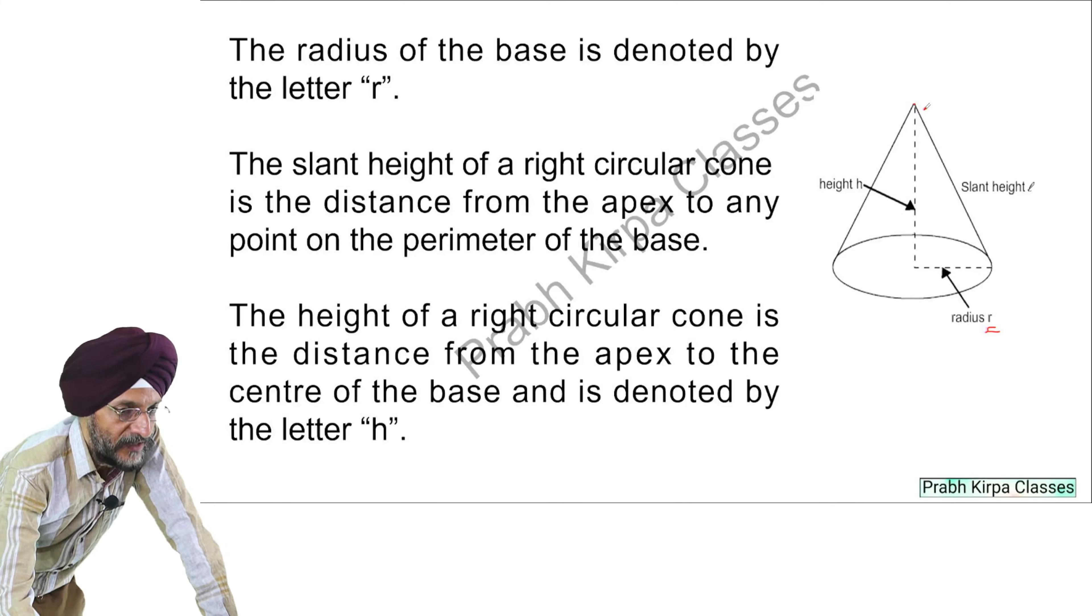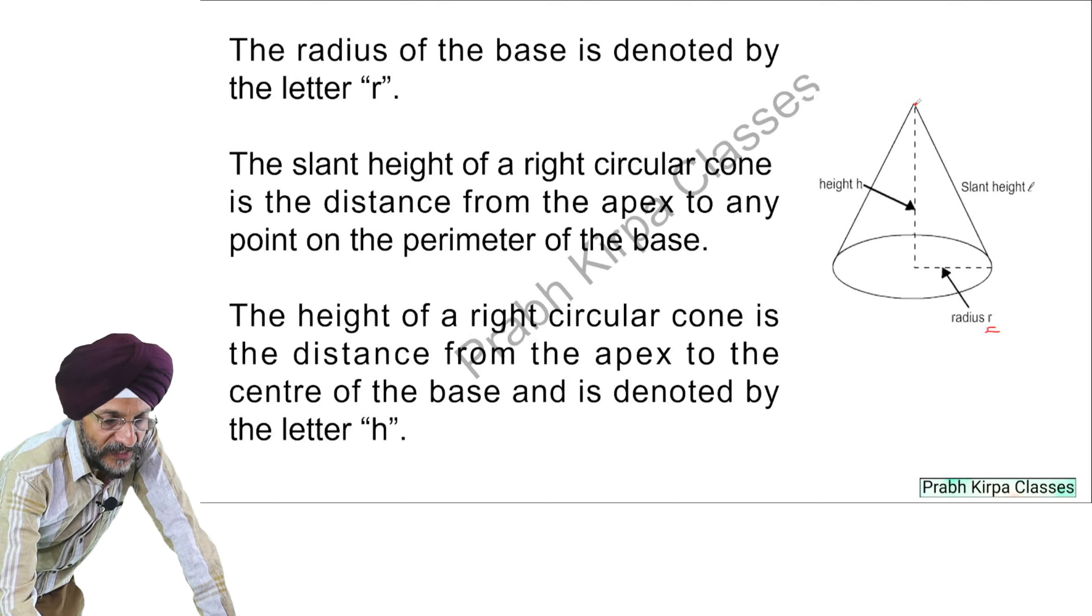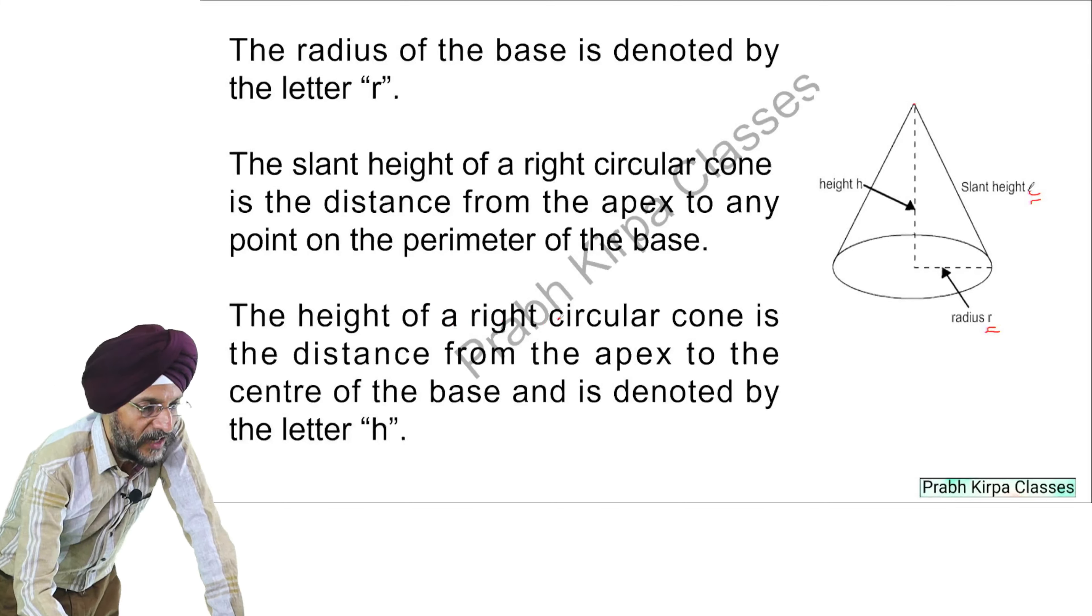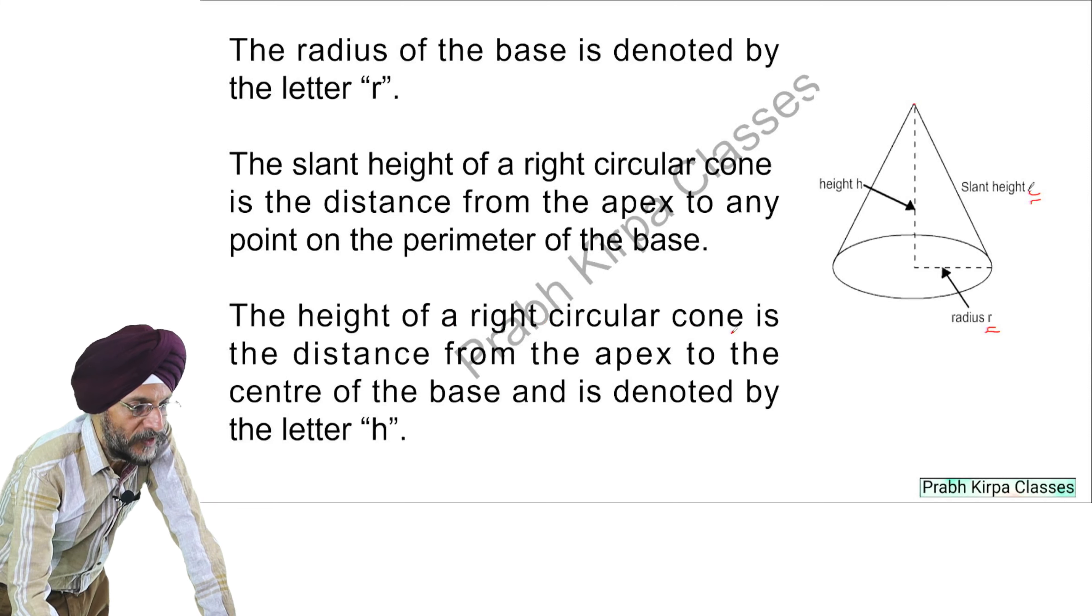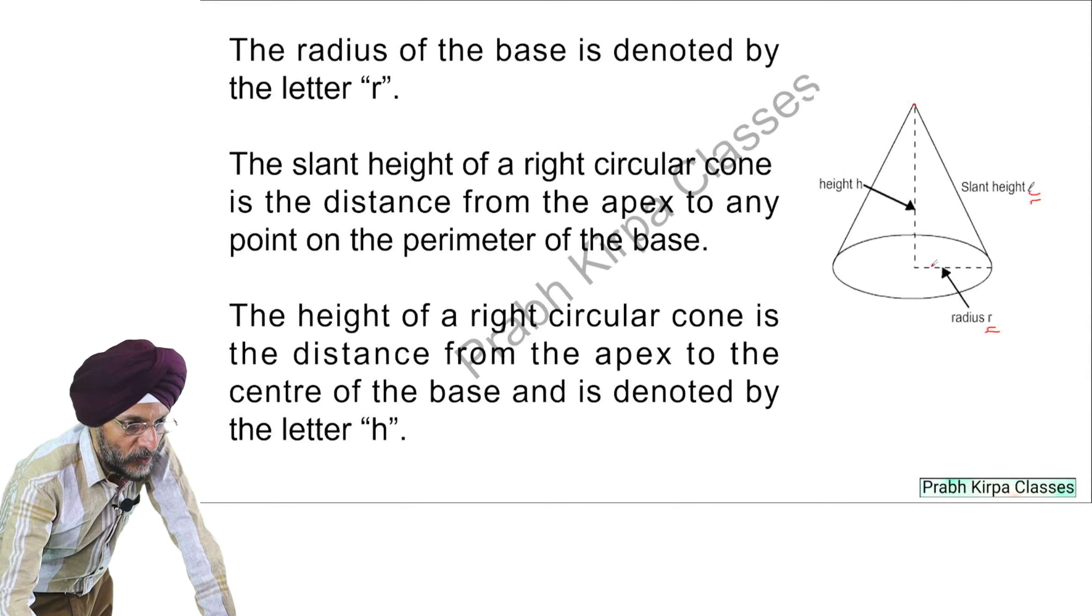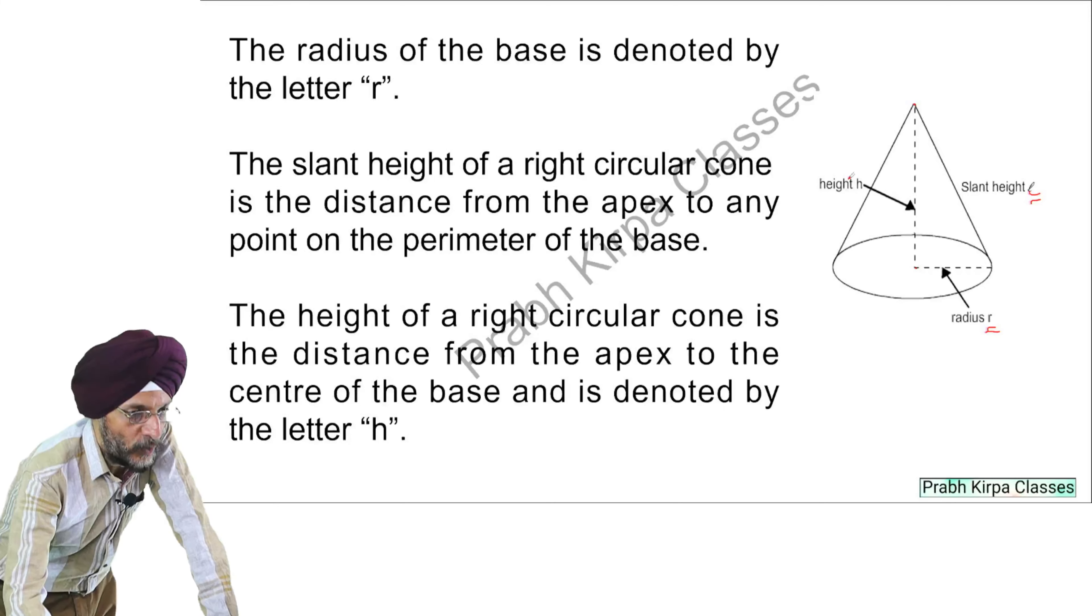It means that if we measure the distance from the apex, that is the pointy part, to any part on the perimeter of the base, it will be the slant height which will be denoted by L. The height of the right circular cone is the distance from this apex to the center of the base. This is the height and is denoted by the letter H.